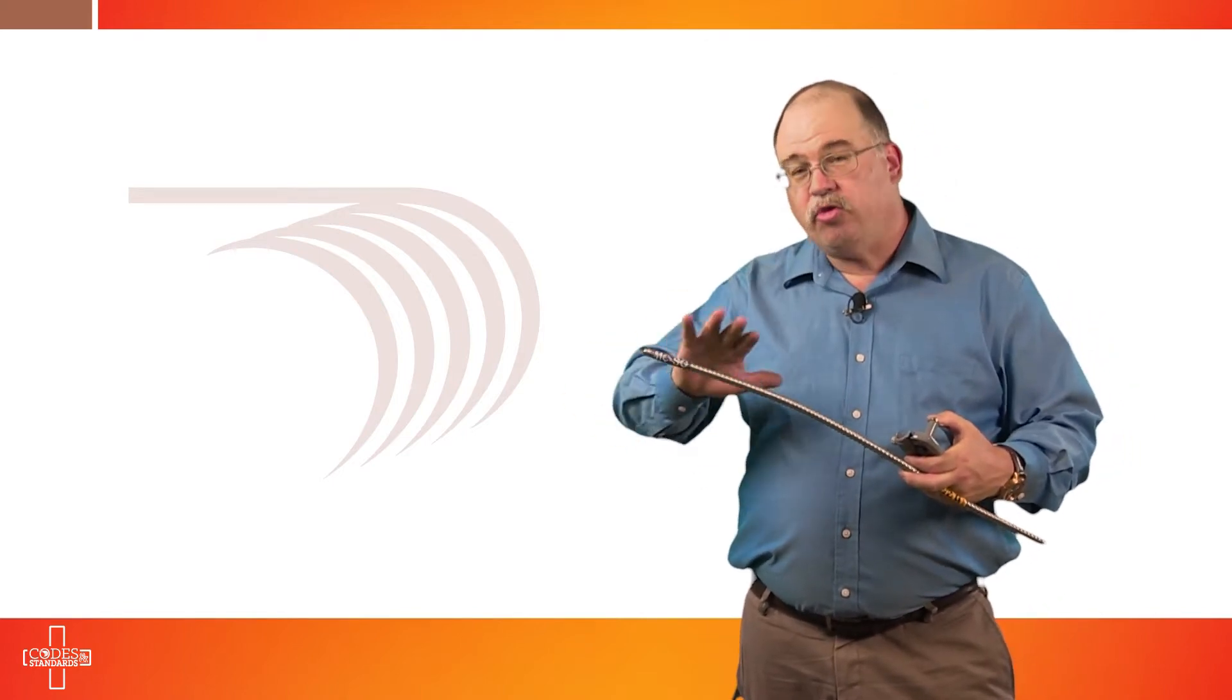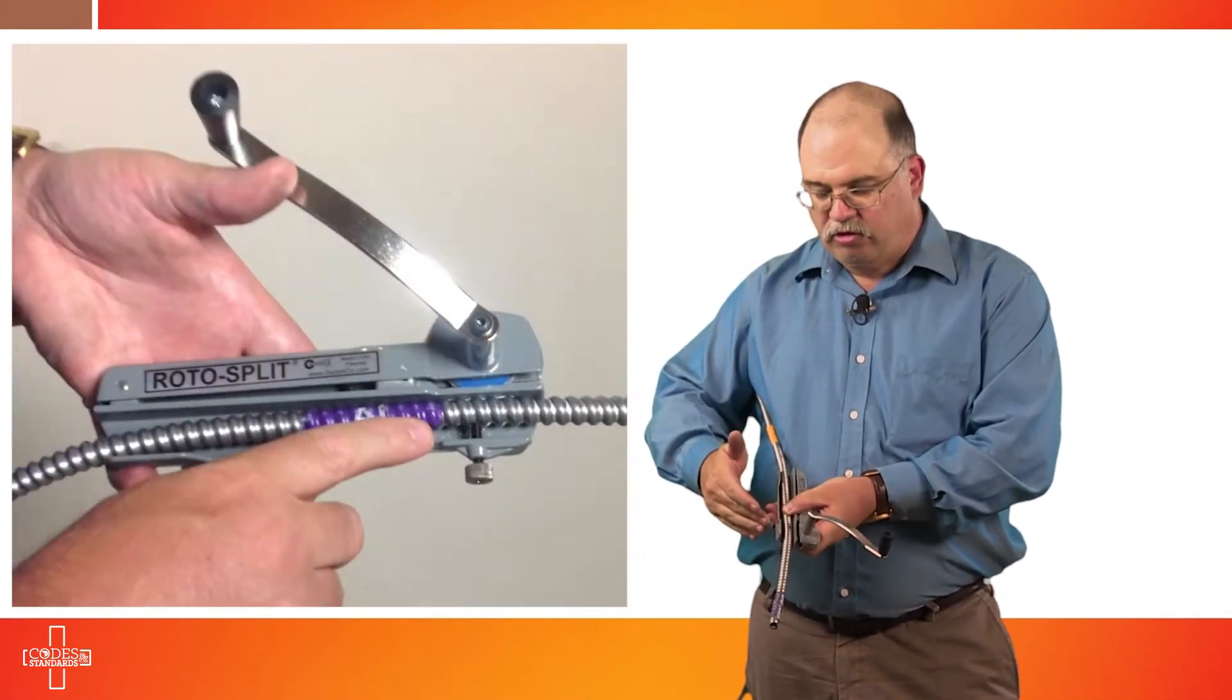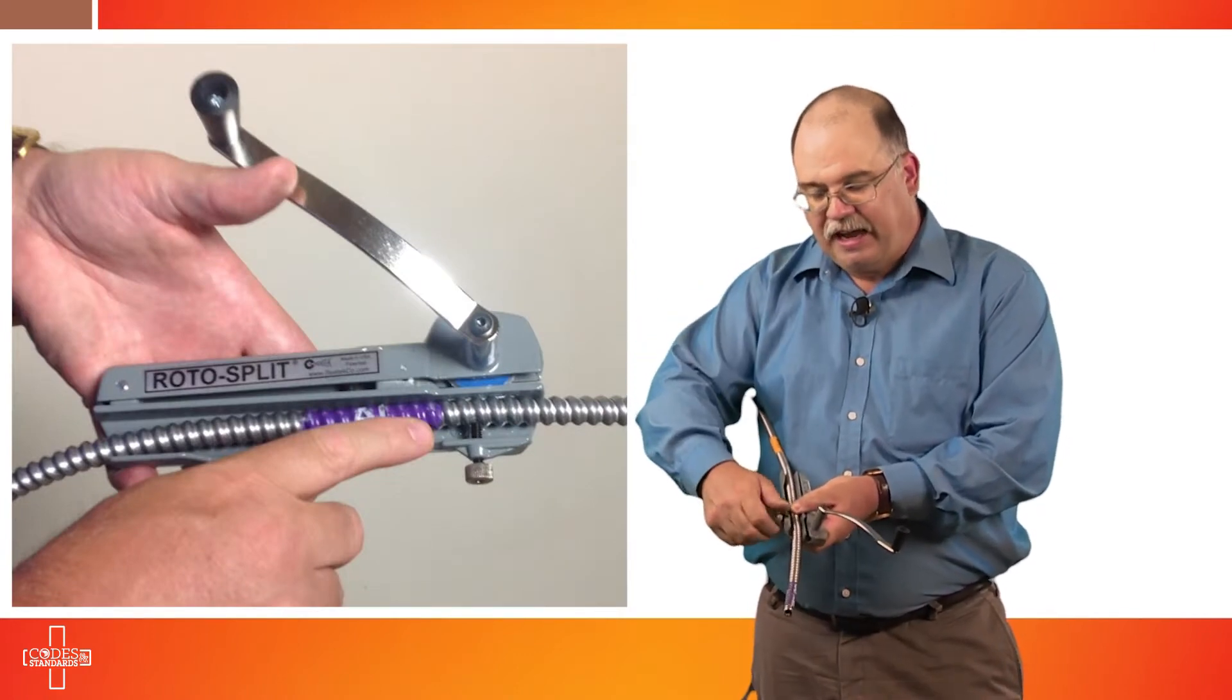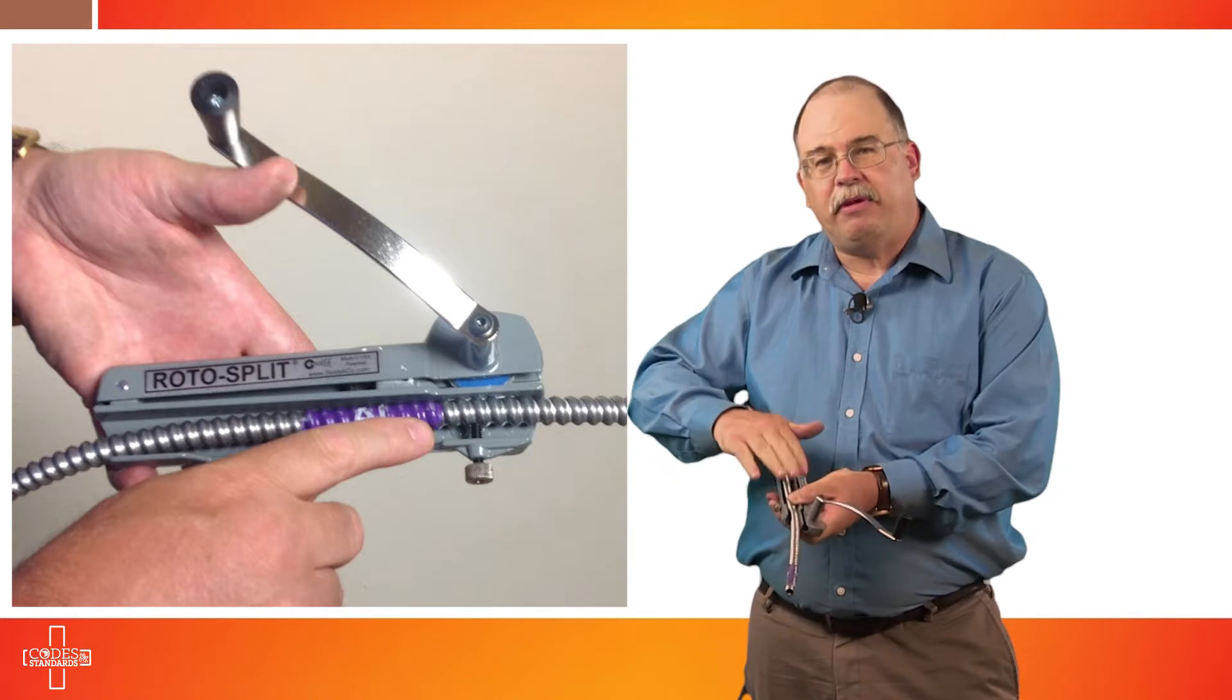We've determined that we need about 8 inches of open conductor, in other words we need to remove the metallic sheathing to expose 8 inches. So what you do is you select where you're going to start your cut in order to expose those conductors. In this case, we place it into the tool. Now this tool has a set screw that you would loosen, place the cable in, and then tighten down. And that holds the cable in place in order for you to be able to cut it.